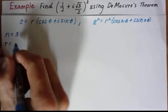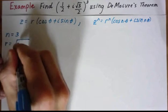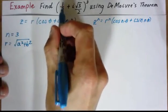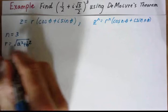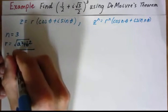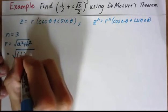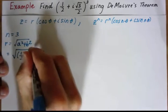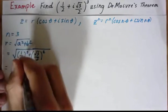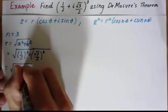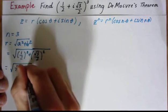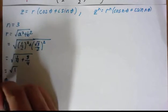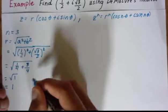r, again, remember, is found by taking the square root of a squared plus b squared. Here is your a value, the constant, and this is your b value. So r is the next thing we're going to find, and we're going to have that as one-half squared plus root three over two, that's squared. Well, that just becomes one-fourth plus three over four. Well, a fourth and three-fourths is one, so the root one is equal to one. So we've got r is equal to one.